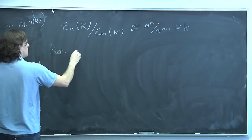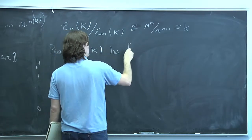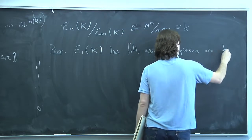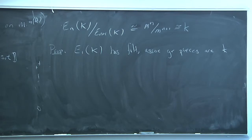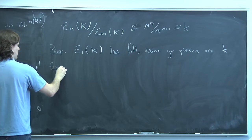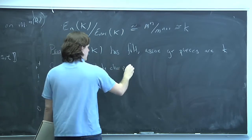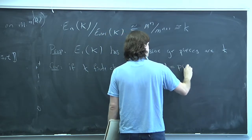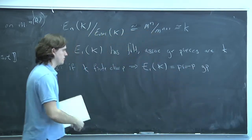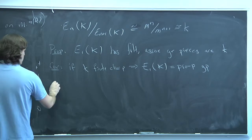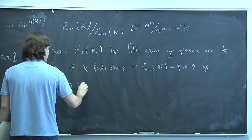This proves that E₁(K) has a filtration whose associated graded pieces are copies of the residue field k. Another way to say this: if K is a finite extension of Q_p, then E₁(K) is a pro-p group. If the residue field is not finite, the K-points won't be compact, so it's not a pro-finite group, but when K is finite the points are compact.